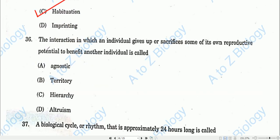Question number thirty-six: The interaction in which an individual gives up or sacrifices some of its own reproductive potential to benefit other individuals is called altruism. Option D will be the correct one.